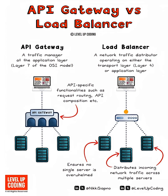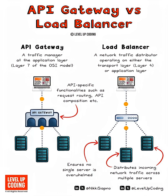A Load Balancer can operate at Layer 4, the Transport Layer, or Layer 7. Its purpose is to distribute incoming network traffic across multiple servers. It balances traffic to ensure no server is overloaded, improving the reliability and performance of applications. It is ideal for scaling applications horizontally and ensuring uptime.